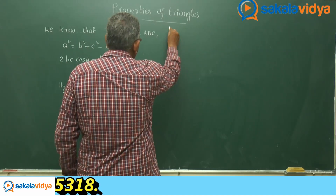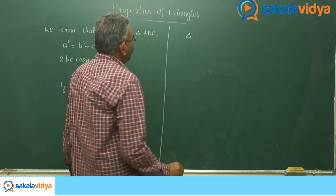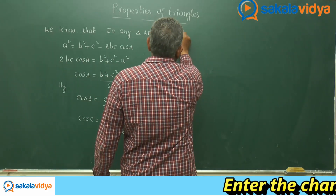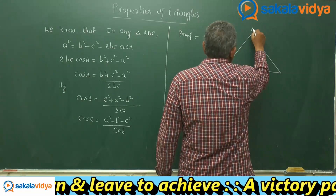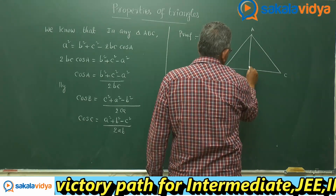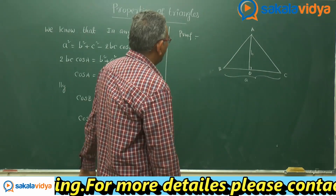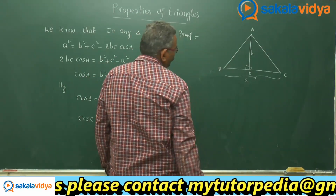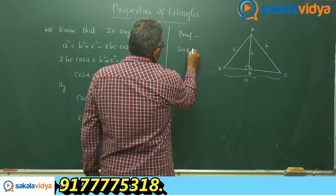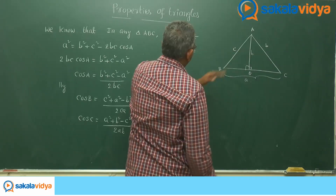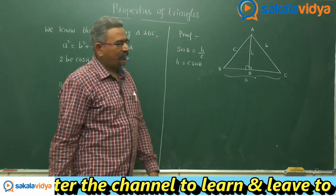Next, let us consider the area of triangle ABC, denoted delta. Consider triangle ABC and draw AD perpendicular to BC, with height h, opposite to angle A. The side opposite to B is small c and the side opposite to C is small b. Let us define sin B: sin B = h / c, so h = c·sin B. The altitude h is equal to c·sin B.